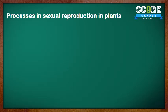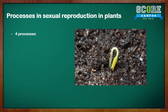Now let's look at the processes involved in sexual reproduction in flowering plants. There are four processes: firstly, pollination; then fertilization; next, seed dispersal; and lastly, germination. We will be looking at each of these processes in detail.